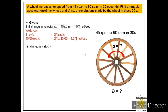The next value given to us is the final angular velocity omega equal to 90 revolutions per minute. With similar steps we convert this into radian per second, which equals 3π radian per second. Along with these two values we are also given time, that is 30 seconds.